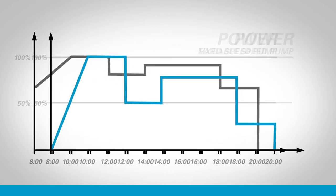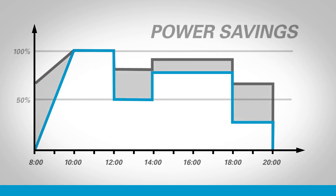The secret of variable performance machines lies in the difference between these two power curves. Where a fixed speed pump sees pressure fluctuations and oscillates between 70 and 100 percent of maximum power, the variable speed machine manages flow fluctuations and oscillates between 0 and 100 percent of maximum power.